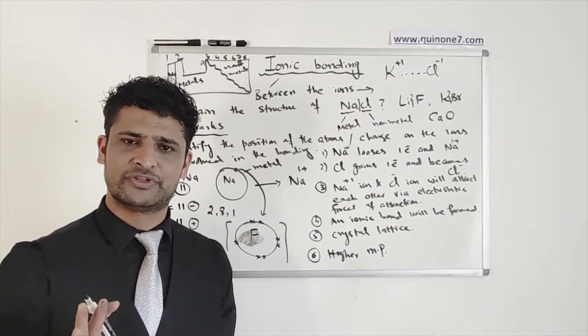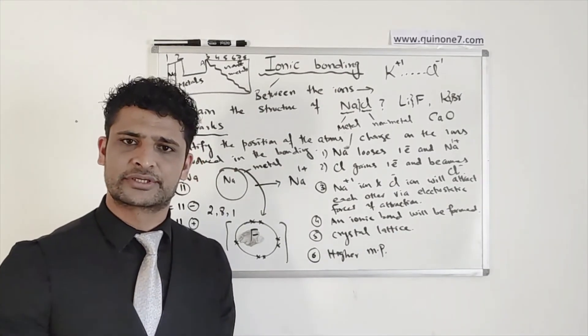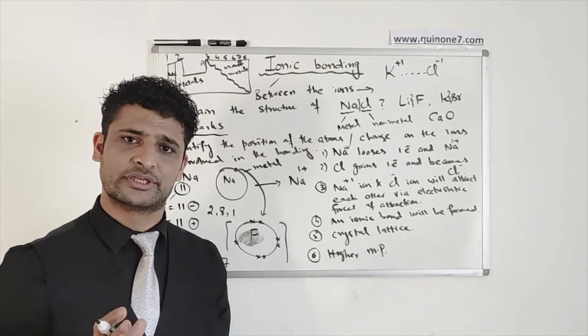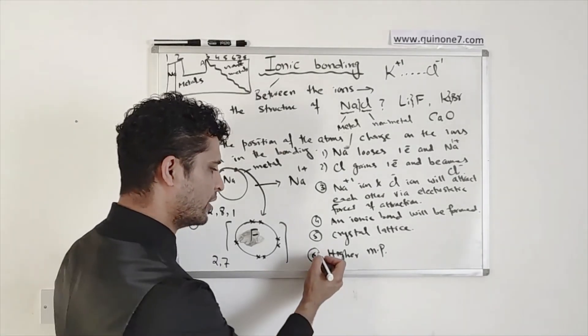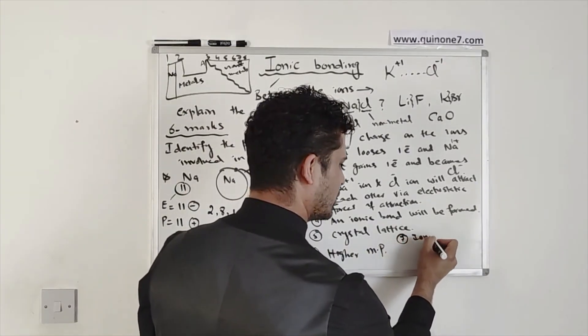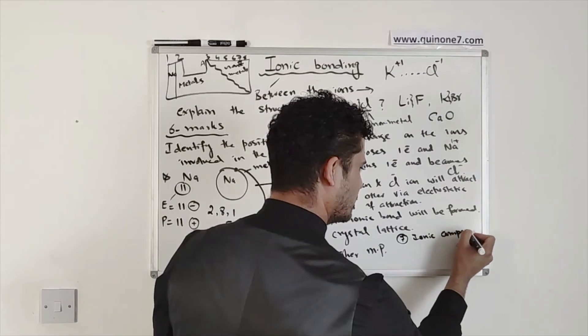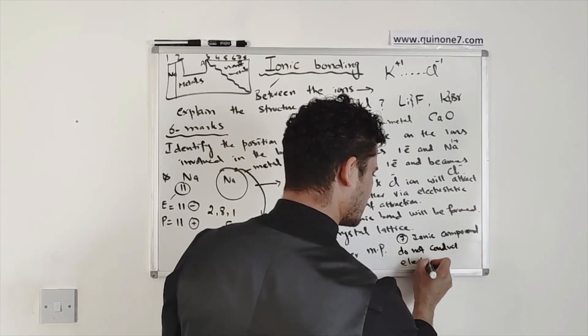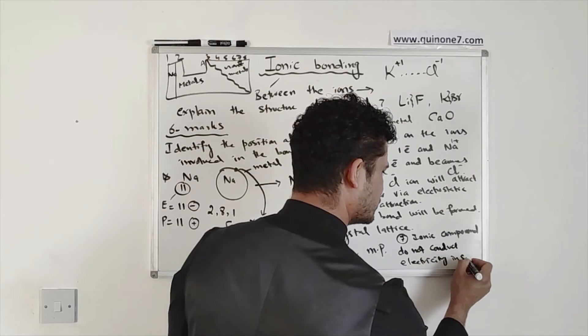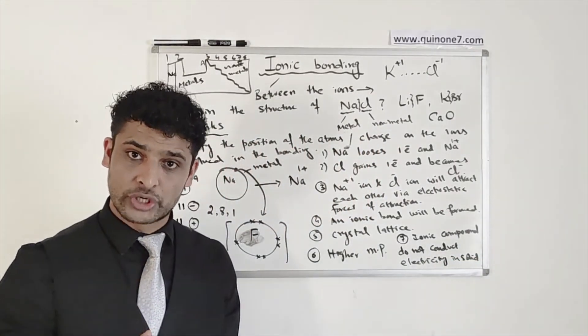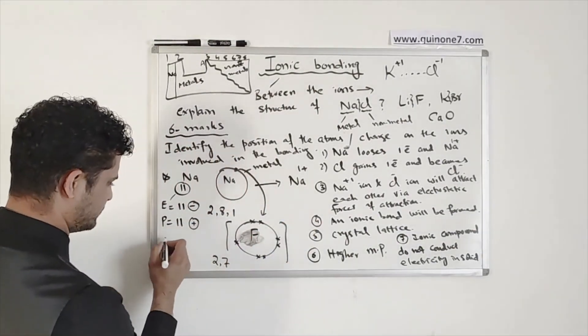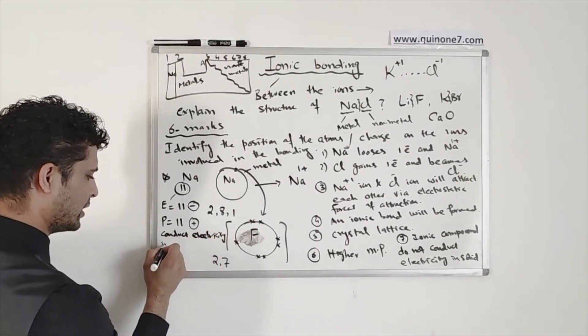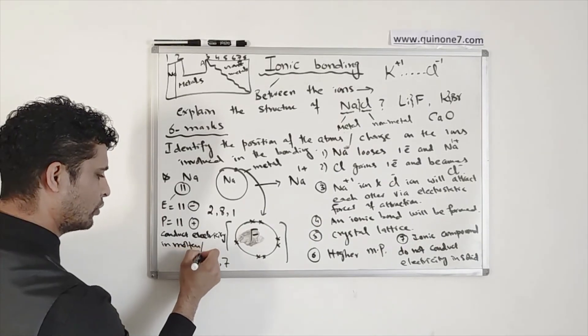In chemistry or physics, when charges move, they can conduct electricity. So there are two ways. Either you will have electrons moving across a circuit, or you will have the ions in the solution which can conduct electricity. So ionic compounds do not conduct electricity in solid form. Okay, but they do conduct electricity.